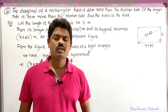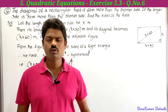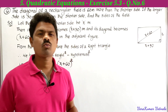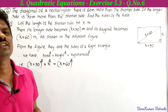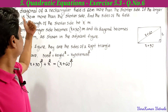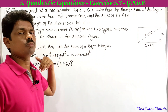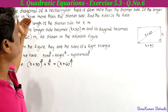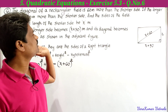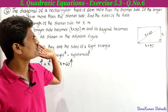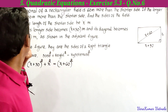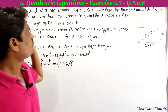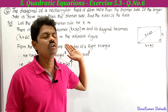Hi, welcome to my channel. My name is Varakumar. Today we are going to solve a problem from the fifth chapter, Quadratic Equations, Exercise 5.3, sixth problem. The problem asks us to find the diagonal of a rectangular field which is 60 meters more than the shorter side, and the longer side is 30 meters more than the shorter side. Find the sides of the field.